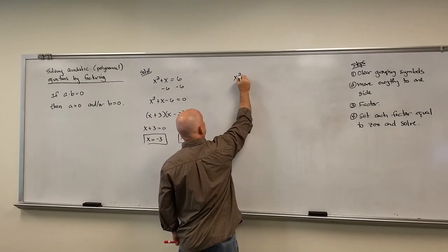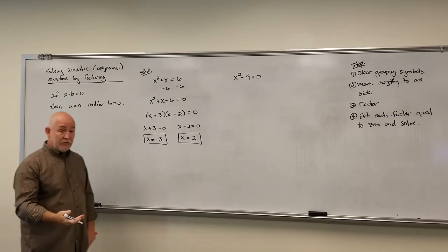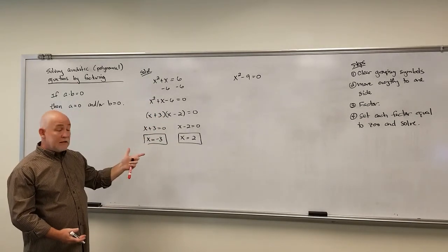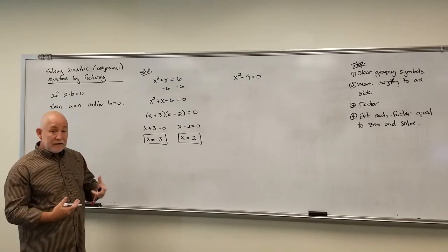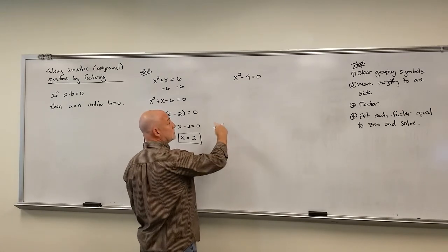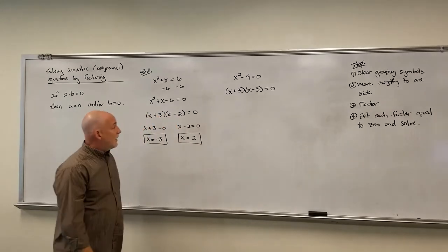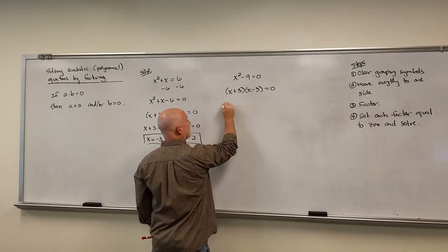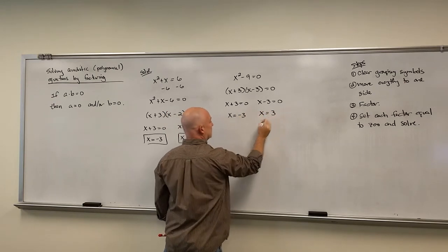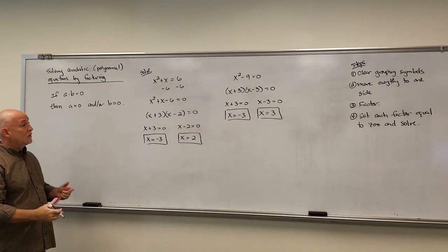Let's revisit x² − 9 = 0 using factoring. We clear grouping symbols — done. Everything's already on one side. This factors as a difference of squares: (x − 3)(x + 3) = 0. One of those factors has to equal 0, so x − 3 = 0 or x + 3 = 0, giving us x = 3 and x = −3. Nice, quick, and easy — factoring is the next quickest way to solve these.